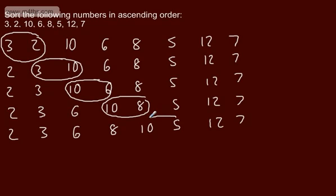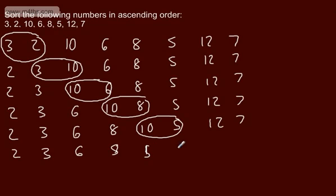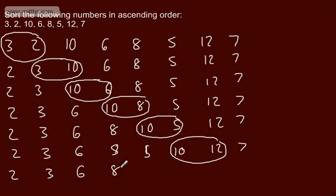Next comparison: 10 and 5. We swap those — the list becomes 2, 3, 6, 8, 5, 10, 12, and 7. Then 10 and 12: we don't need to swap these; they're in order.